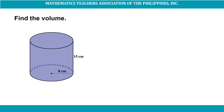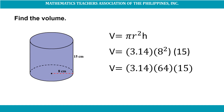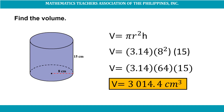Let us try to find the volume of a cylinder given its height, which is 15 centimeters, and its radius, which is 8 centimeters. To find its volume, we have to use the formula V = πr²h, where pi is equivalent to 3.14, radius is 8 centimeters, and height is 15 centimeters. Substituting into our formula: V = 3.14 × 8² × 15 = 3.14 × 64 × 15. So the volume of this cylinder is 3,014.4 cubic centimeters.